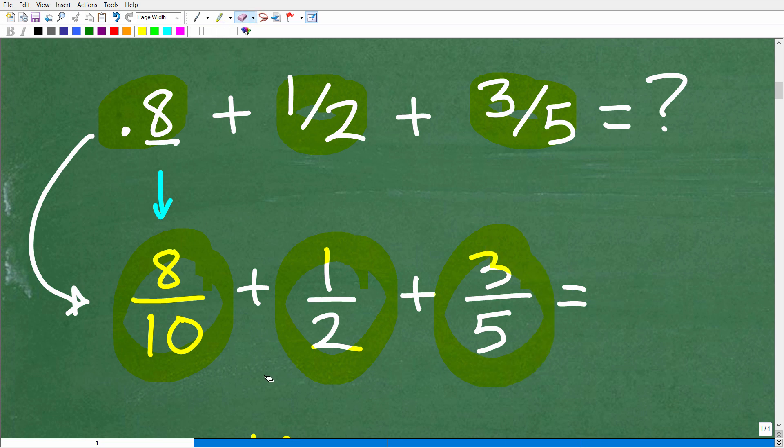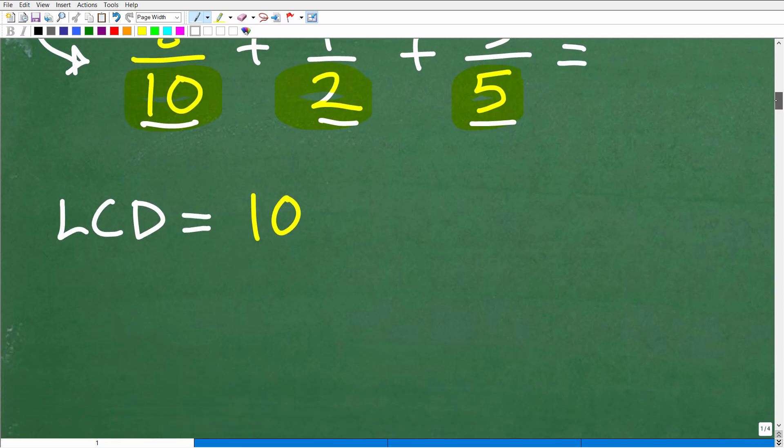So what do we need to do? Well, we're going to have to add these fractions. So how do you add fractions? Well, you can't add or subtract fractions unless the denominators, these bottom numbers, are the same. So we have a little bit of an issue here. This one's 10, this one's 2, this one's 5. We're going to have to get all these denominators the same. So that means we're going to have to find the lowest common denominator.